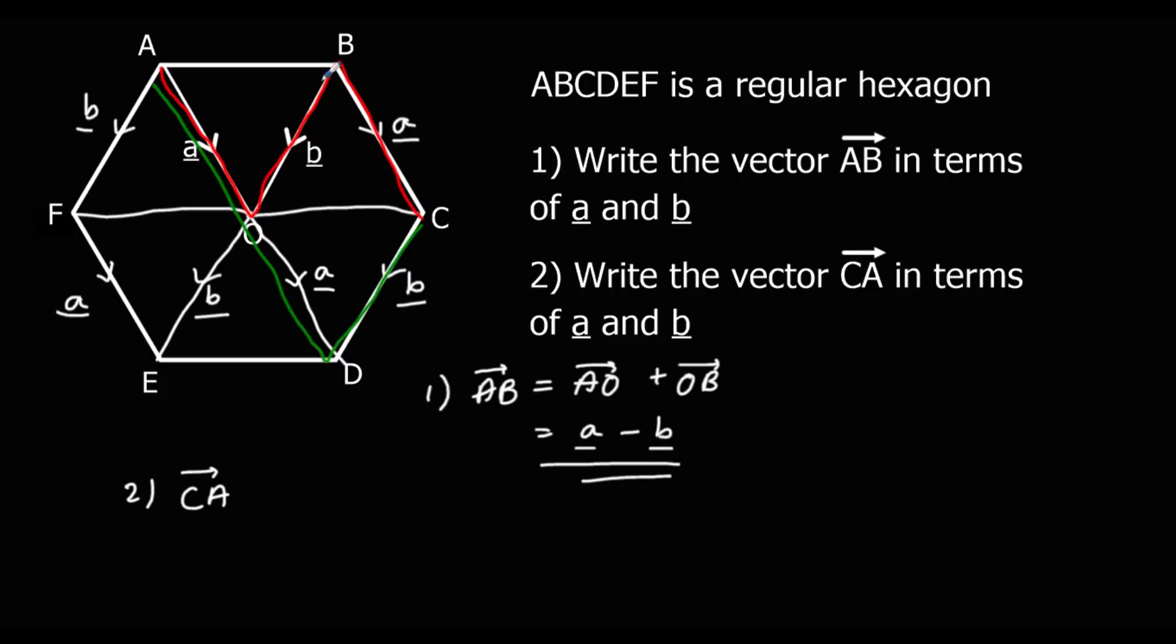we're going to go minus a plus b minus a. So minus an a plus a b minus an a. So that's one b minus two a's.